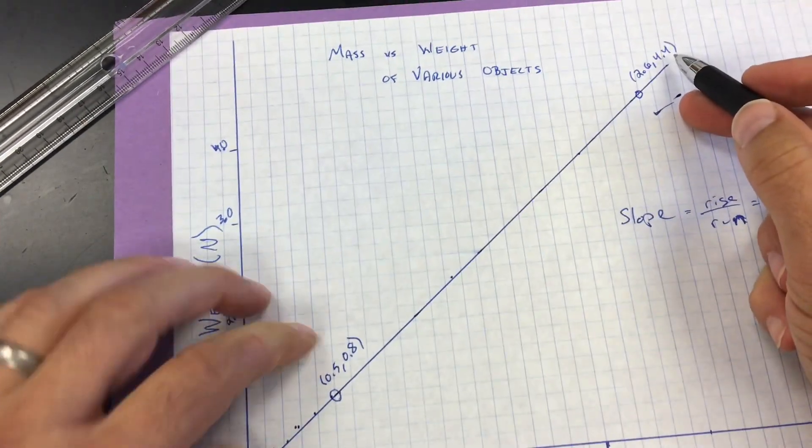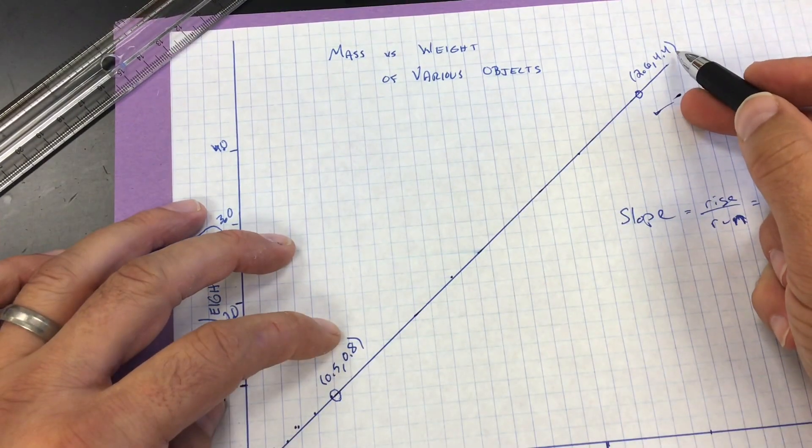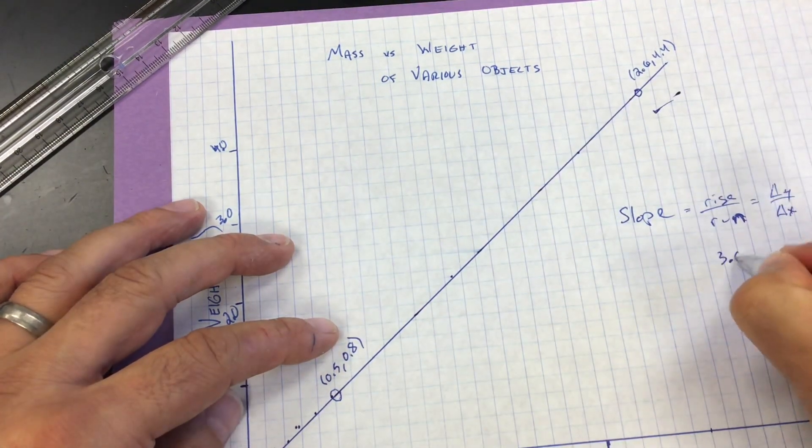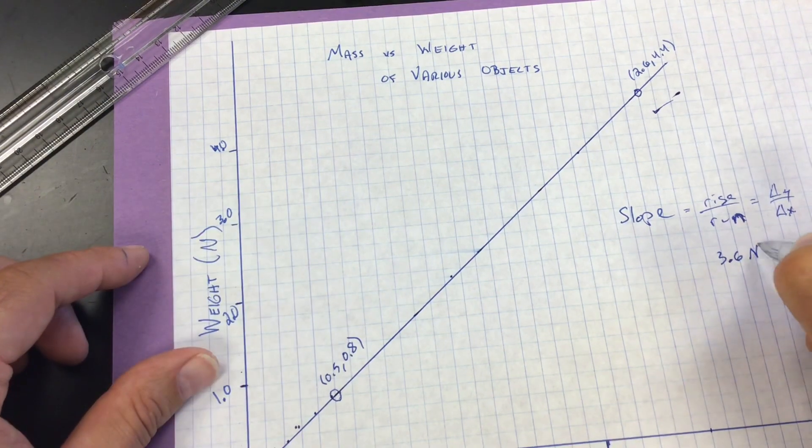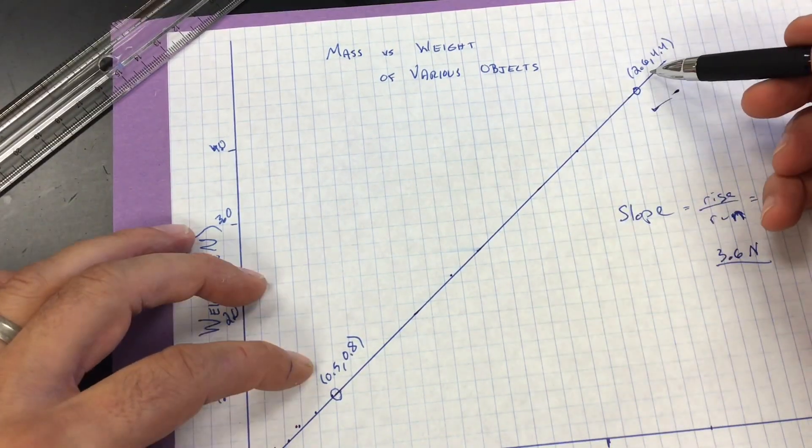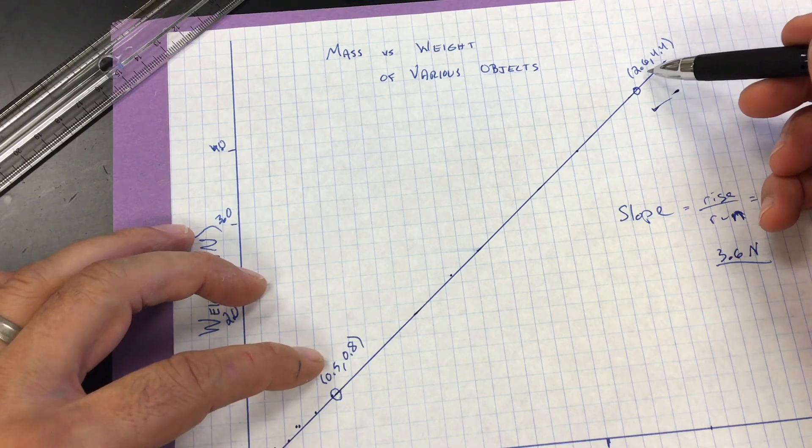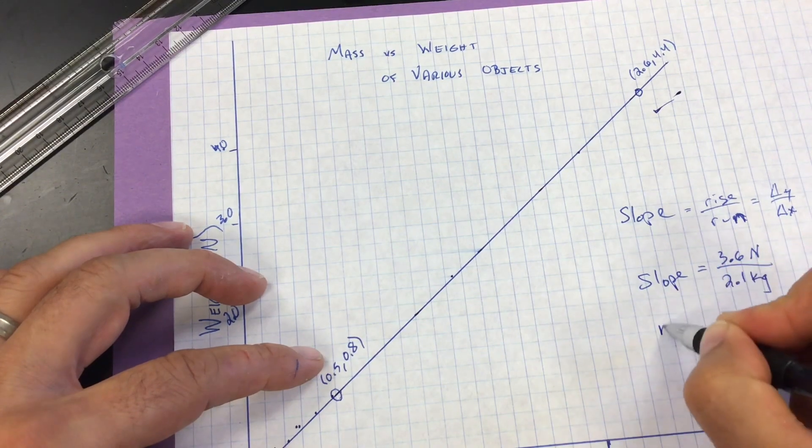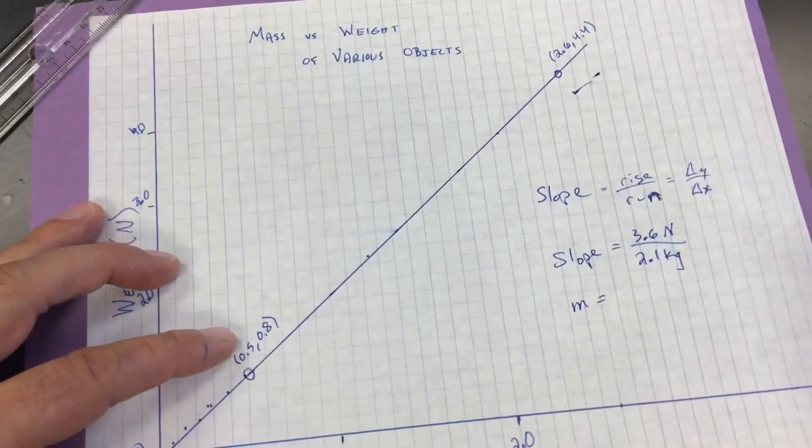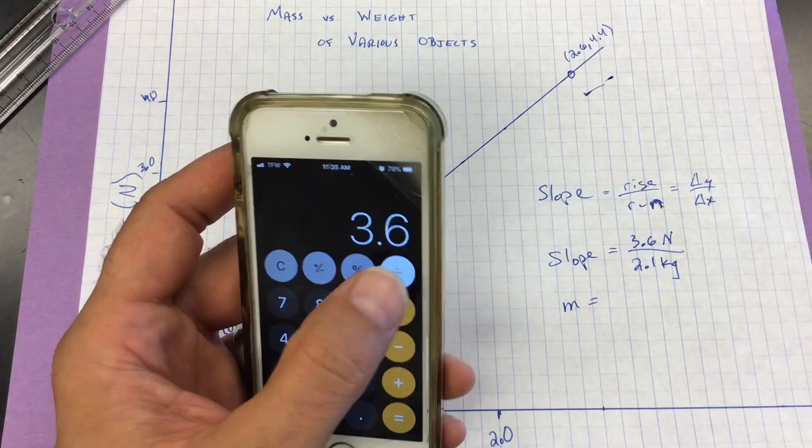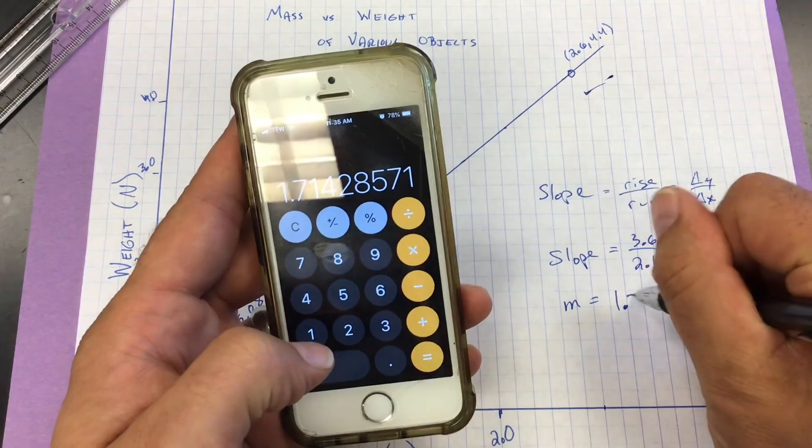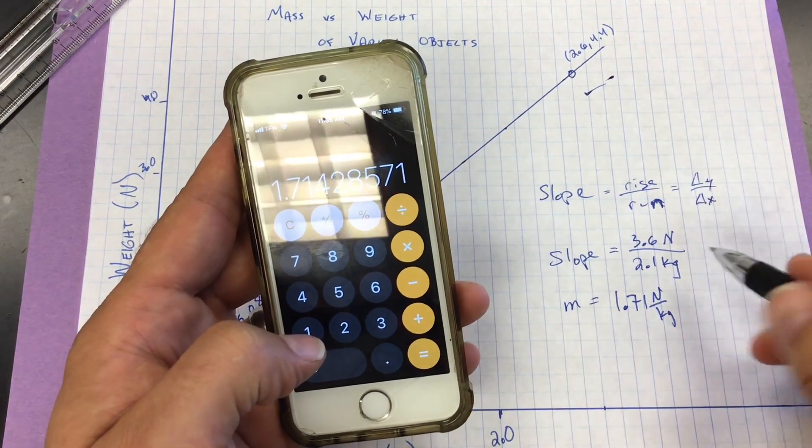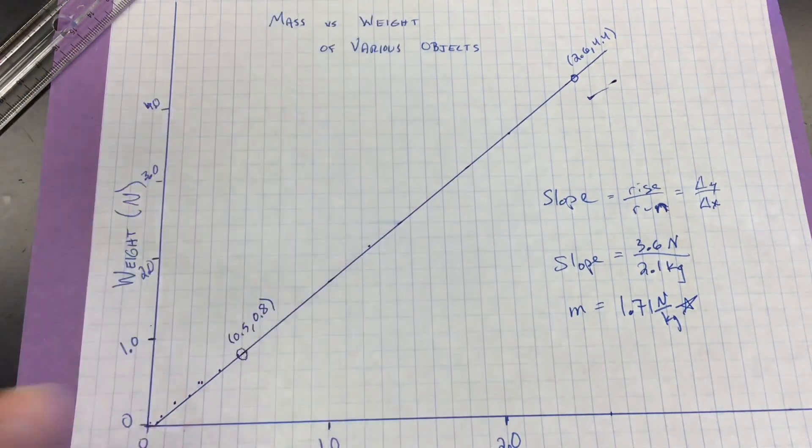Then find the difference between the y values. 4.4 minus 0.8 is 3.6. It rises, it goes up 3.6. And the units are newtons. And in the x, 2.6 minus 0.5 is 2.1, divided by 2.1 kilograms. That is the slope. That is what we call the m in the equation. 3.6 divided by 2.1 is 1.71 newtons per kilogram. Don't forget the units of newtons per kilogram.